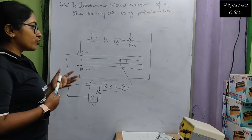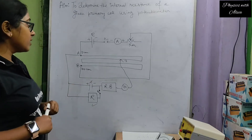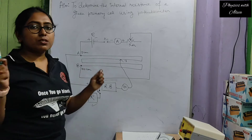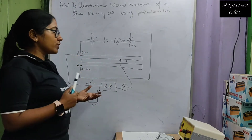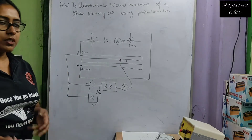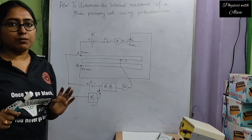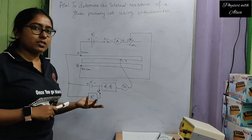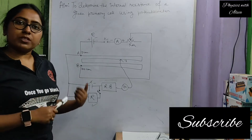Now I will show the apparatus and then we will start the practical. Before starting, I would like to say that we can use the resistance wire of the meter bridge in this practical also. In the case of a potentiometer, we get a long resistance wire of more than 100 centimeters, whereas in the meter bridge, the wire is 100 centimeters. That is the basic difference, but otherwise we can use either one.